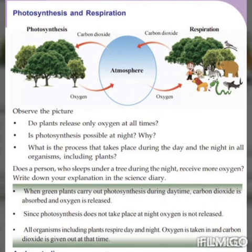Now observe the picture. During photosynthesis, carbon dioxide is absorbed by the plants. During respiration, oxygen is taken in, and this process is a cyclic process. Photosynthesis does not take place at night, so oxygen is not released at night.